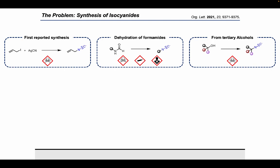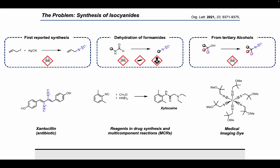So given how challenging these compounds are to make, the question is why would we want to make them? Well, for example, some of these compounds have interesting properties, such as xanthocillin, which is an antibiotic. You can use them as reagents in drug synthesis and multi-component reactions, for example, in the synthesis of xylocaine, which is a topical anesthetic. Or even, for example, in medical imaging, where they can be used as dyes when coordinated to a metal center.